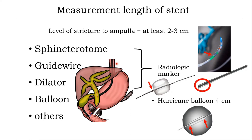It is important to place the proper length of stent. This is the technique to measure the stent length. You can measure using a sphincterotome, guidewire, or the markers on a dilation balloon. Measure the level of the stricture to the ampulla plus at least 2 to 3 cm, and select the proper length of stent.